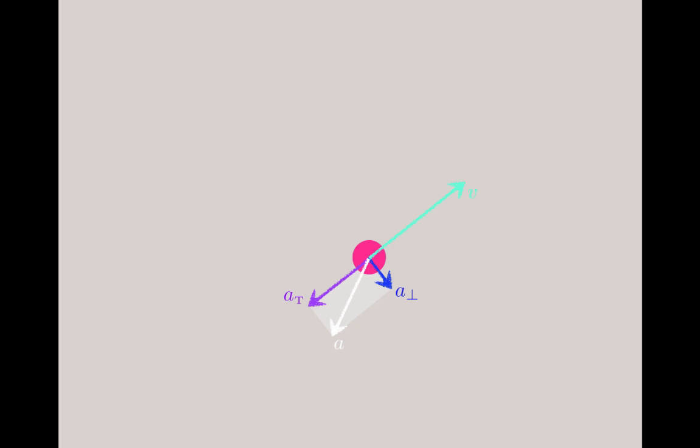The component along the line of motion indicates that this particle is slowing down, while the component perpendicular to the velocity vector indicates that it's turning. So although the particle is moving tangent to this line at the moment, it will soon be here. And the path of motion might look something like this.